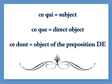The difference between ce qui, ce que, and ce dont, and qui, que, and dont is that these don't refer to a specific noun that's already been mentioned. They refer to something less specific, like an idea or a statement. That idea may or may not already have been stated.